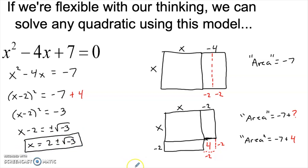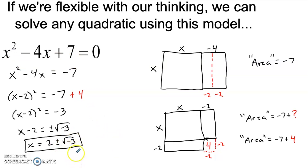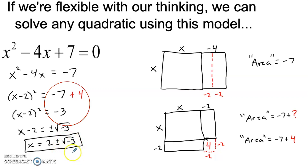Then we simply take the square root of both sides, and we arrange to solve for x being 2 plus or minus the square root of negative 3. There are two roots, because this is a quadratic, so we're going to have two solutions to this algebraic equation. The other thing worth pointing out is notice we have a square root of negative 3. That means that these solutions are imaginary. Now if you haven't learned about imaginary numbers yet, that's okay — you can ignore this part. Suffice to say it's an extension of the number system, and the reason it's popping up here is because we had this negative area.